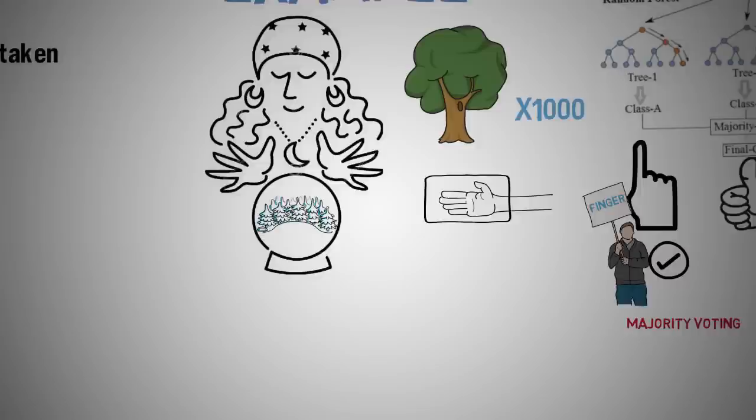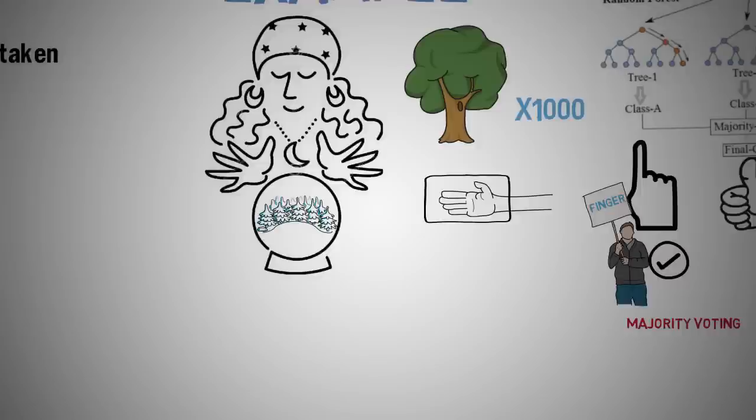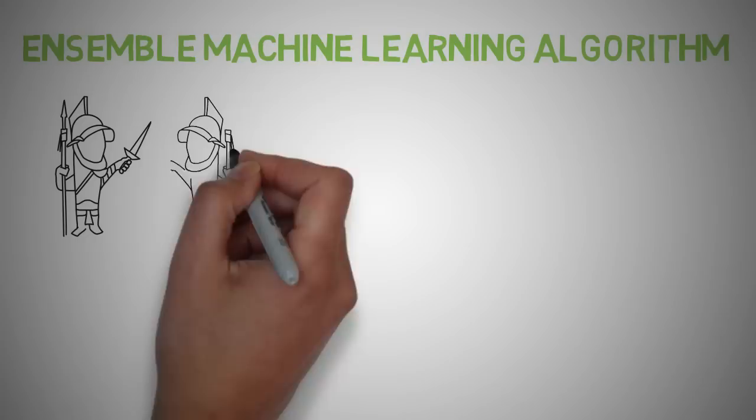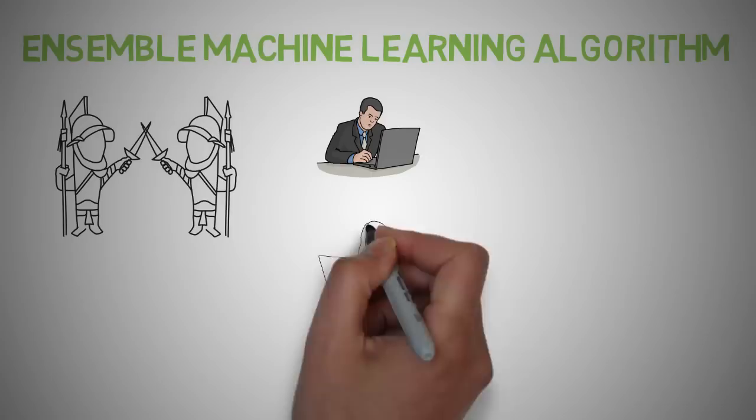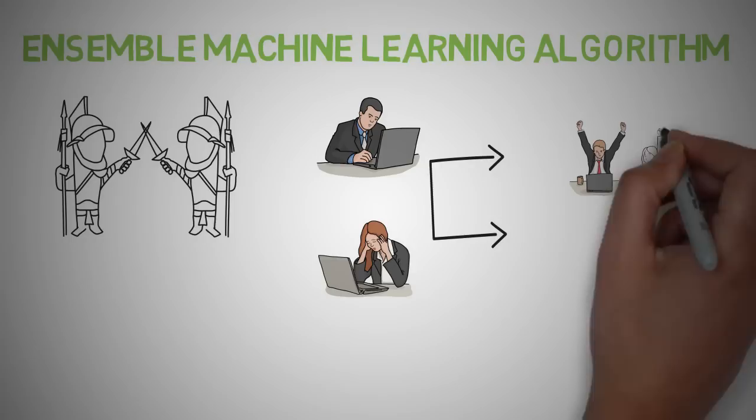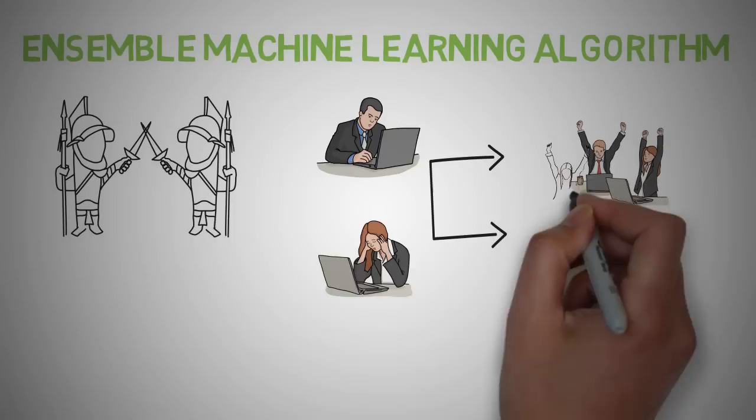And this is why random forests are known as Ensemble Machine Learning Algorithm. Ensembles are a divide and conquer approach used to improve performance. The main principle behind Ensemble Methods is that a group of weak learners can come together to form a strong learner. Each classifier is individually a weak learner, while the classifiers taken together are a strong learner. And thus Ensemble Methods reduce the variance and improve performance.